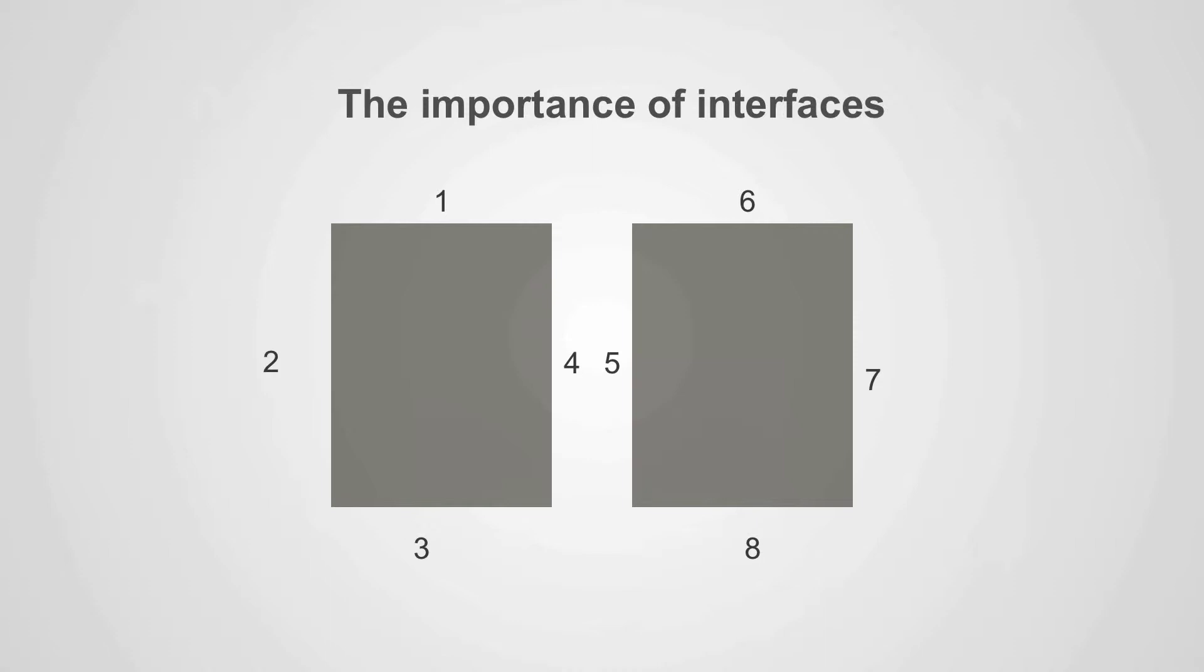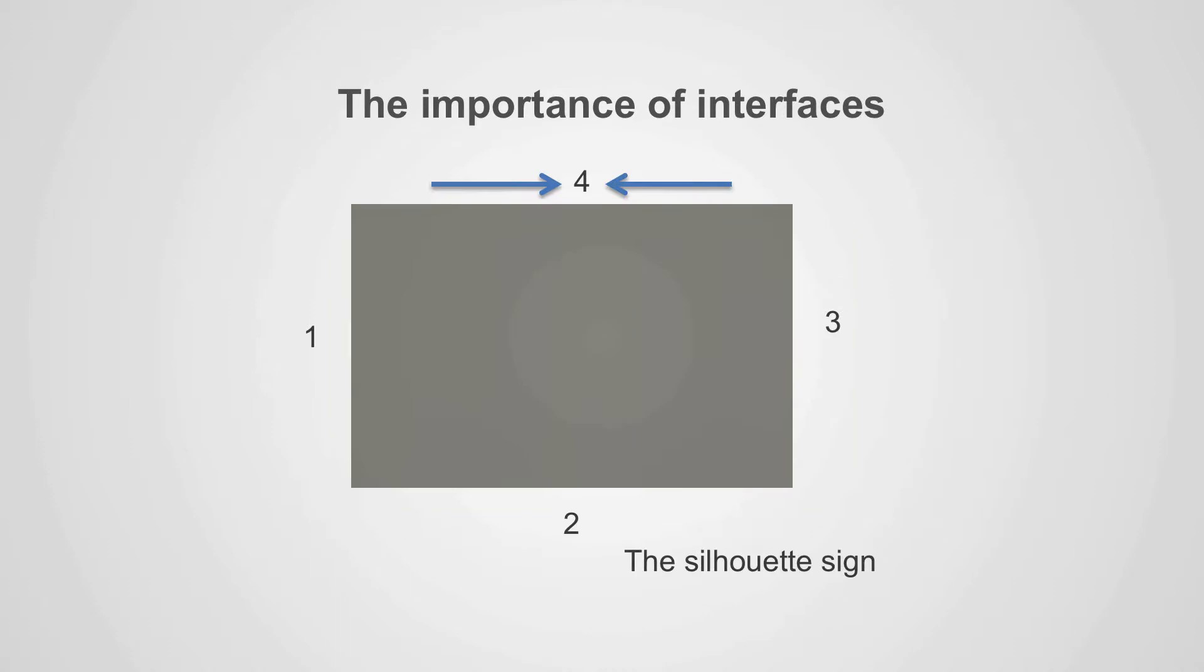Each rectangle has four edges for a total of eight. If the two rectangles are positioned so that the medial edges touch, on x-ray we can no longer see the two rectangles separately, but see one larger rectangle with only four edges. This is called the silhouette sign.